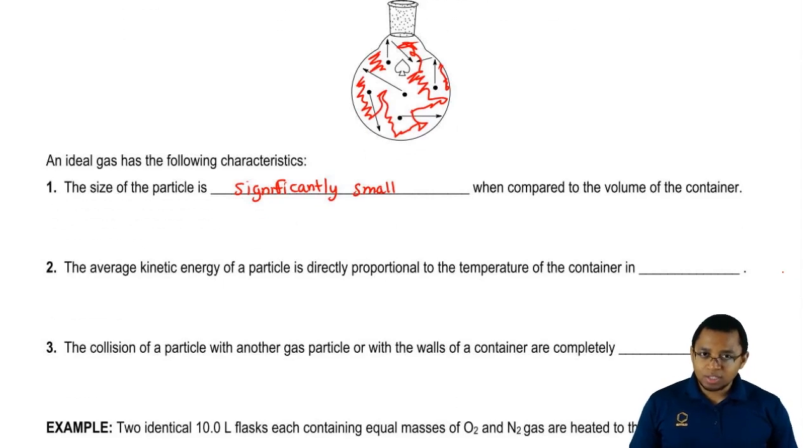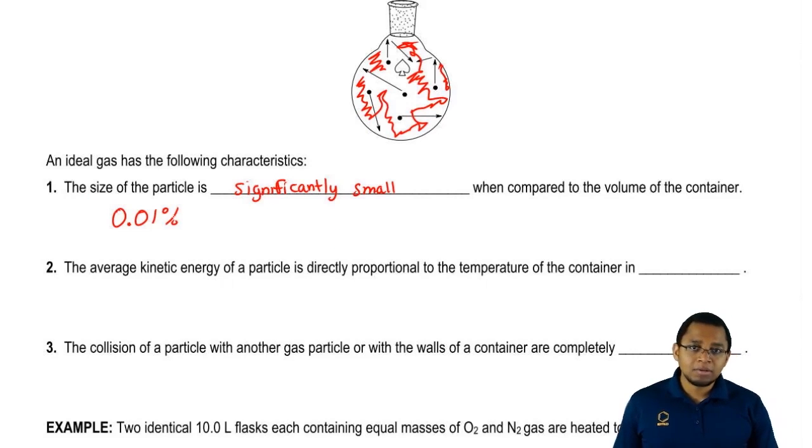Usually an ideal gas will take up about less than 1%, usually about 0.0% of the total volume. An ideal gas, an individual gas particle, would take up usually less than this percentage of the total available space.